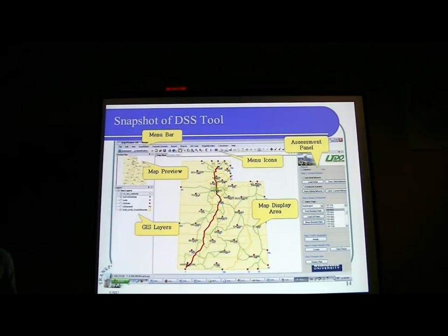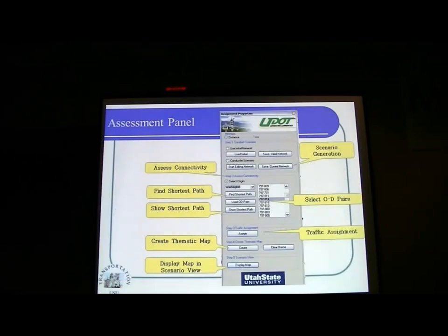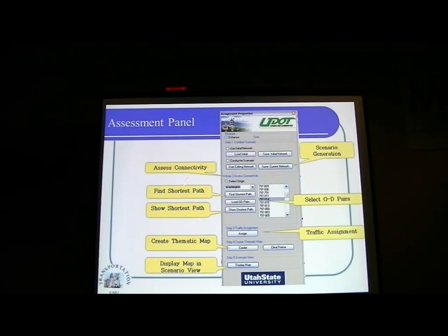Here is the snapshot of the decision support system. You can see the MapWindow interface used in this case. On the right-hand side, we provide an assessment panel where you can assess the consequences of disruptions to the freight network. In this panel, you can generate a scenario — for example, a bridge disruption — and assess the resulting connectivity changes.